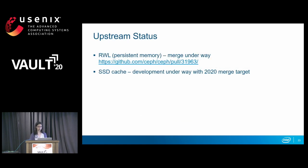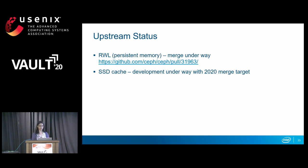The upstream status for replicated write log is that it's currently under merging — the portion including the local cache implementation is underway, and we are working on the design for the replication portion. For SSD caching, we've done an initial small POC to understand where the performance stands, and we are still working on merging it upstream, with a merge target of 2020.